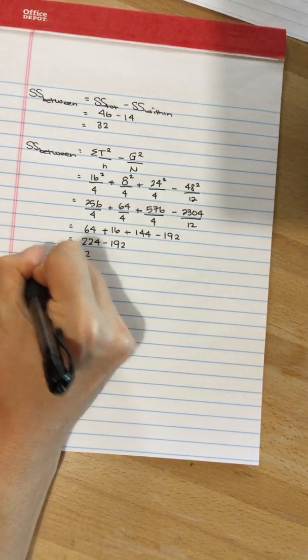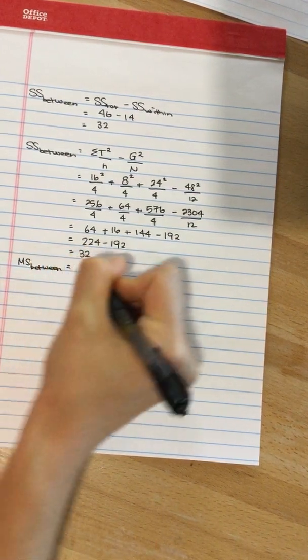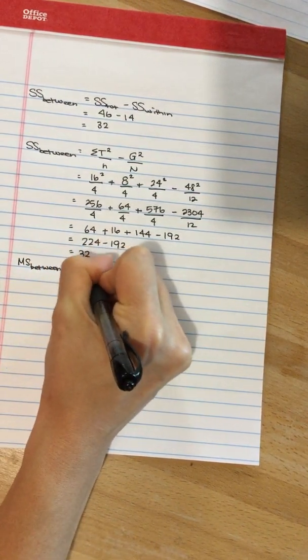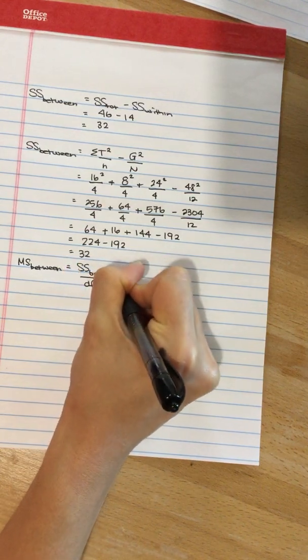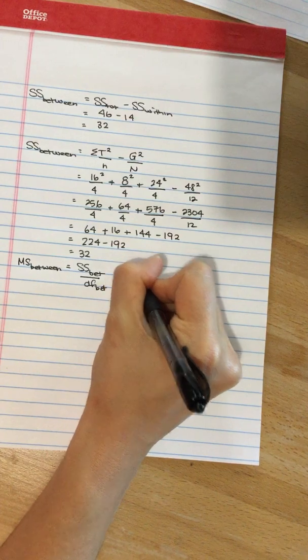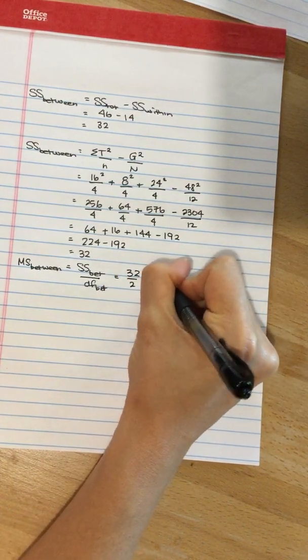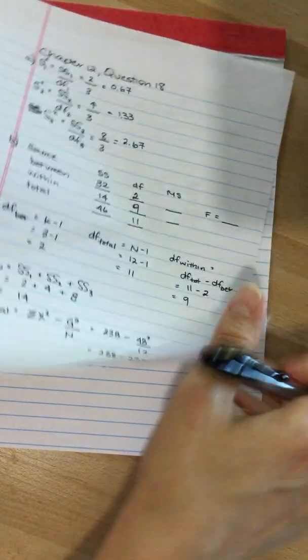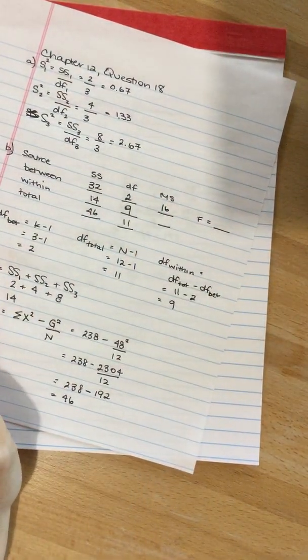Next up, we're going to calculate mean square between, which is sum of squares between divided by degrees of freedom between. So, 32 divided by 2, which is 16. I'm going to bring back my ANOVA summary table, plug that right in.